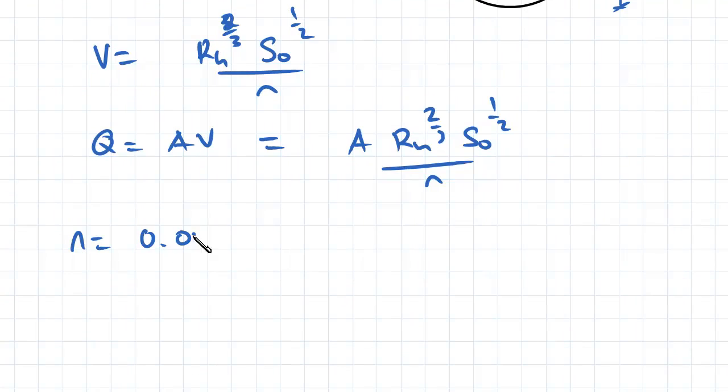In this case our Manning coefficient n is equal to 0.012, and you can just work that out from a table. What we need to first work out is our area. The pipe's only half full, so the area of the pipe is pi times r squared, but we divide that by two because we just want half the area. That's going to be equal to pi times the radius of 1 squared divided by 2, which equals 1.57 meters squared.